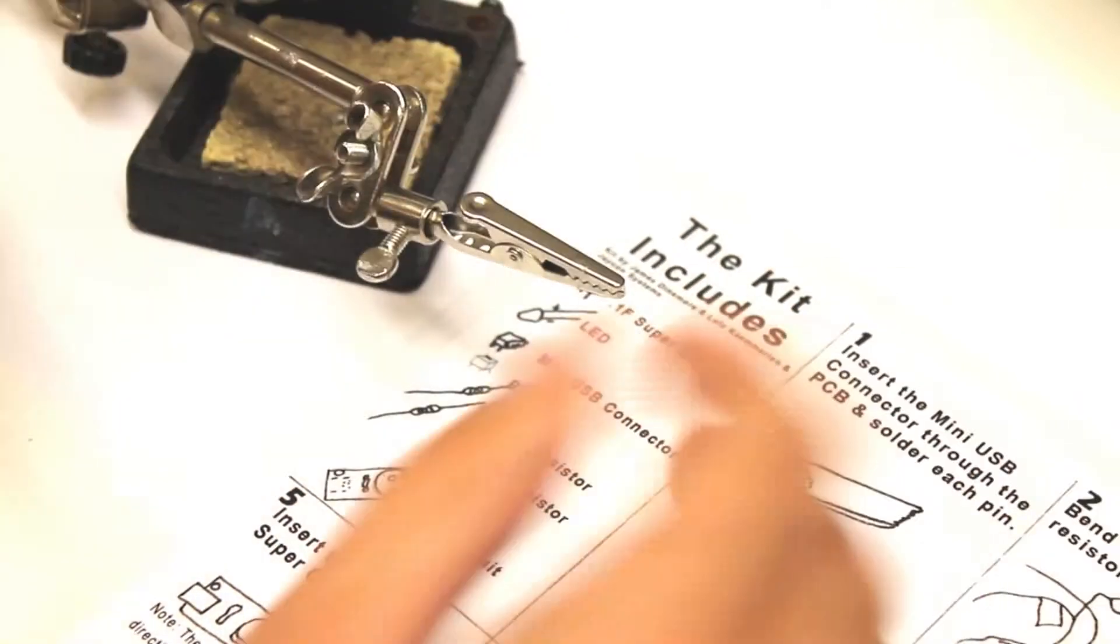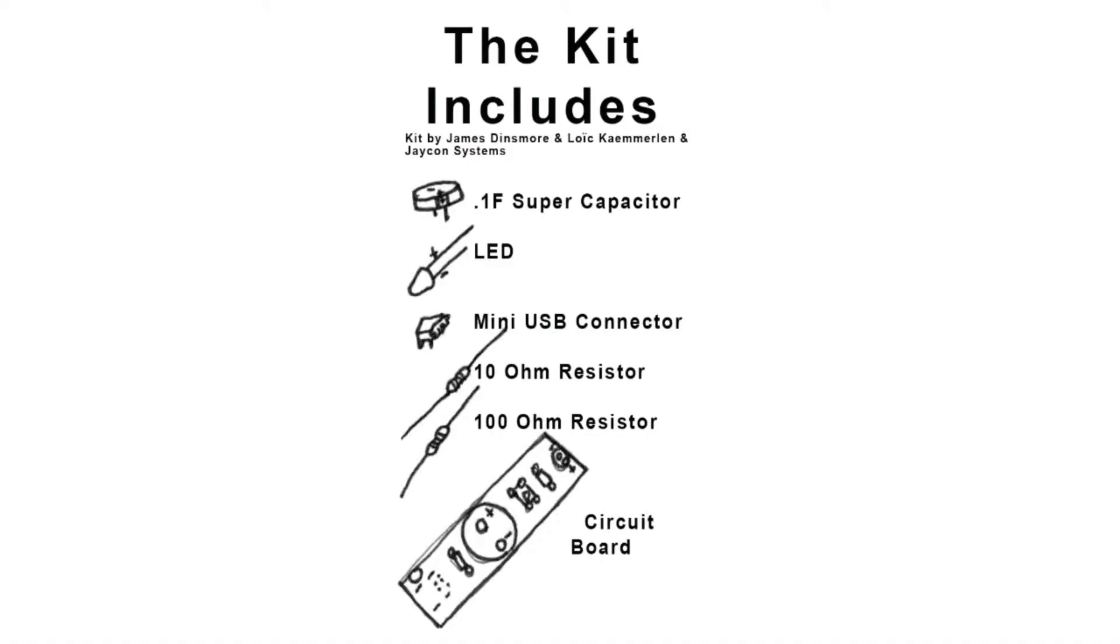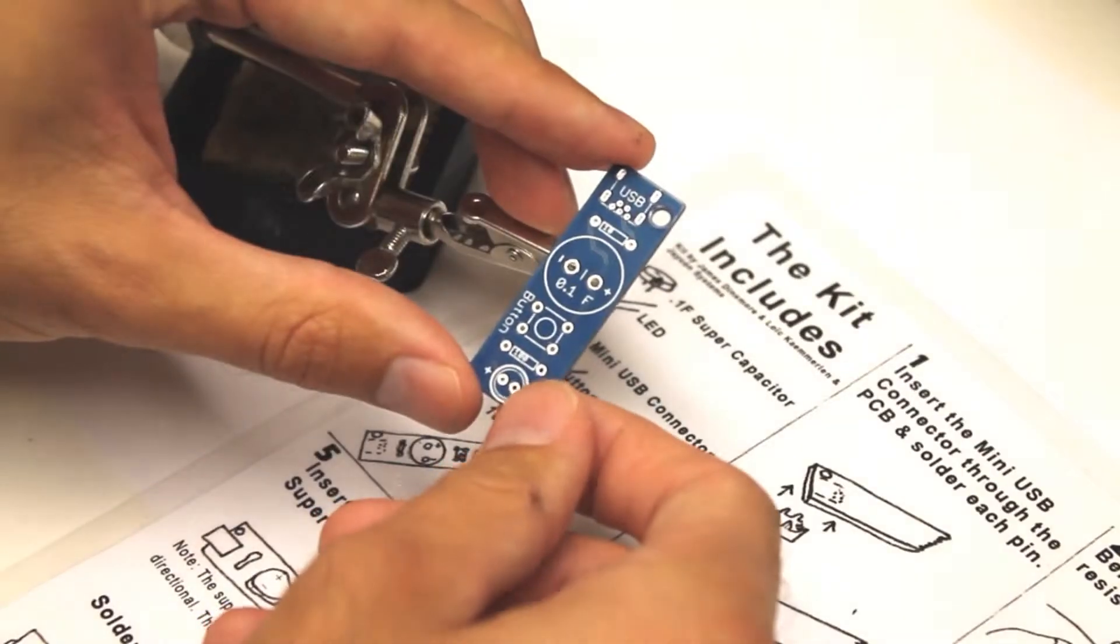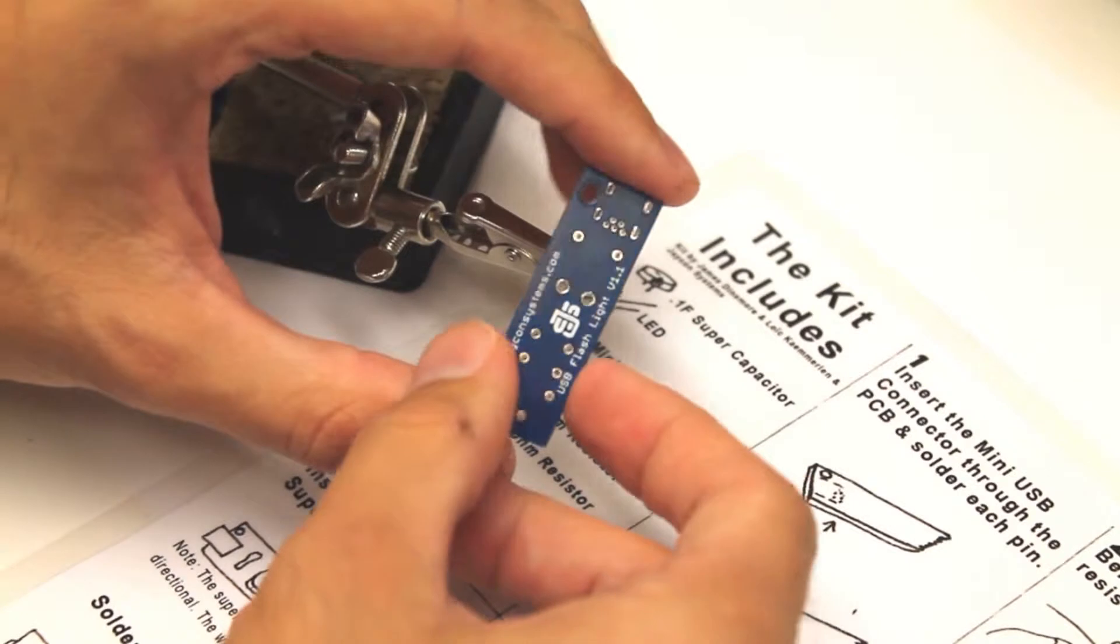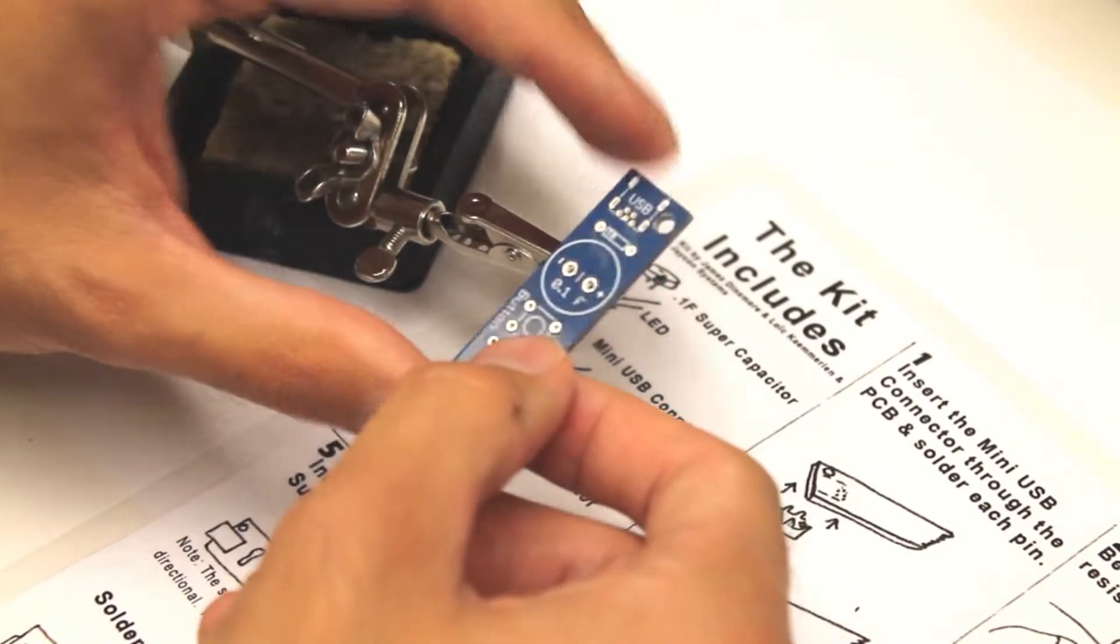So let's go ahead and get into it and start assembling it. You should have seven different items with the kit, including the PCB. This is the back side of the PCB. You see the logo and the top side. You can see all of the silkscreen.